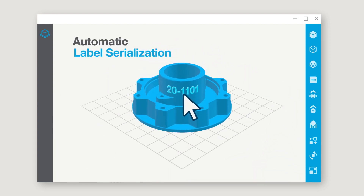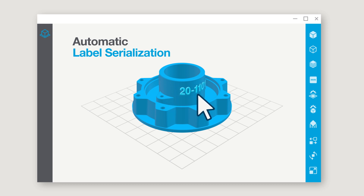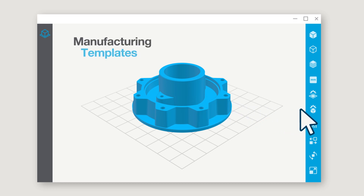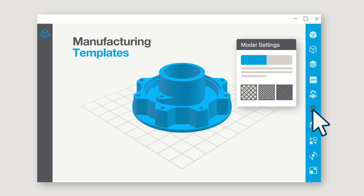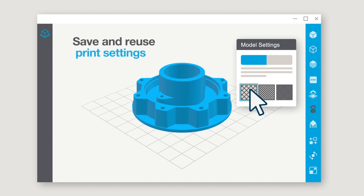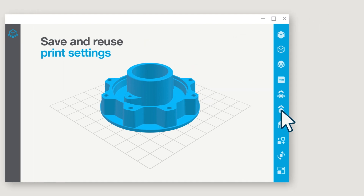And GrabCAD Print Pro takes the hassle out of labeling, with automatic label placement and unique code generation to easily trace your printed parts. You'll also get manufacturing templates that make your workflow more efficient and improve part quality. You can save and reuse print settings to automate common jobs.